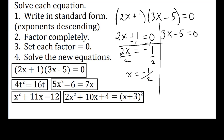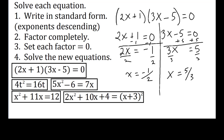Then for the second equation, 3x - 5 = 0. Adding 5 to both sides gives 3x = 5. Dividing by 3, x = 5/3. So two answers. Unless you're solving an application problem, whenever there is an x squared, that 2 is telling you there are two answers.